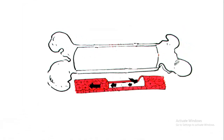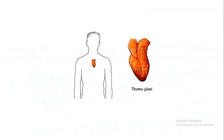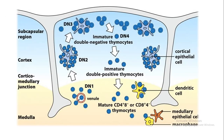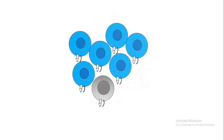Now let's look at how T regulatory cells develop. Just like normal T cells and B cells, development starts from the bone marrow, where hematopoietic pluripotent stem cells give rise to lymphoid progenitors, which in turn give rise to T cell precursors. T cell precursors migrate to the thymus, where there are sequential stages of T cell development. At the end, immature T cells that recognize peptides loaded on MHC class 2 molecules start expressing the CD4 co-receptor and downregulate CD8. Among these CD4 positive T cells, some become T regulatory cells.